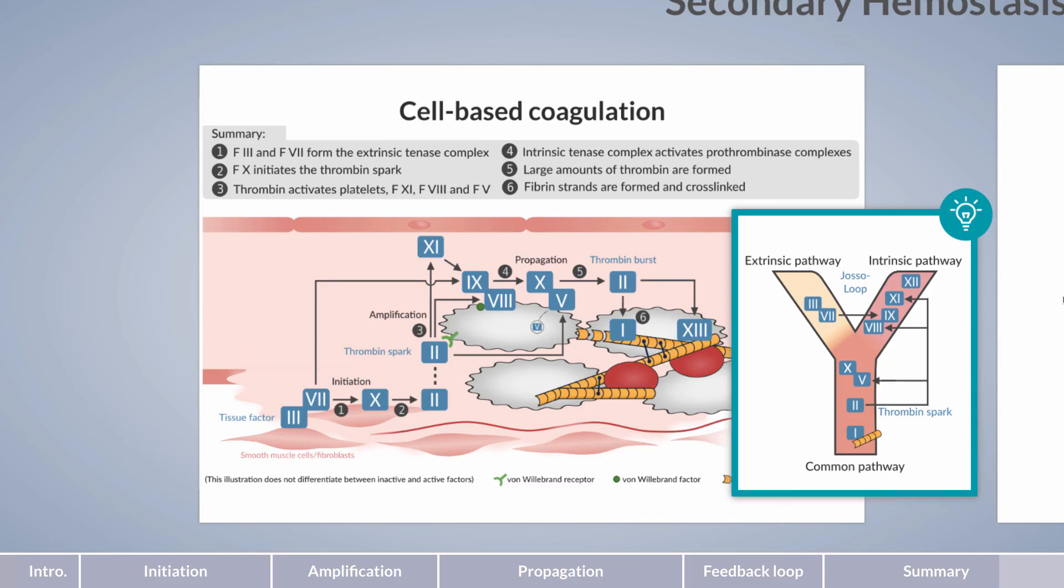Thrombin, therefore, plays a double role in this coagulation model, acting as a spark in the initiation phase and a burst in the propagation phase. This double role is made possible by the fact that coagulation occurs on the surface of various cells.